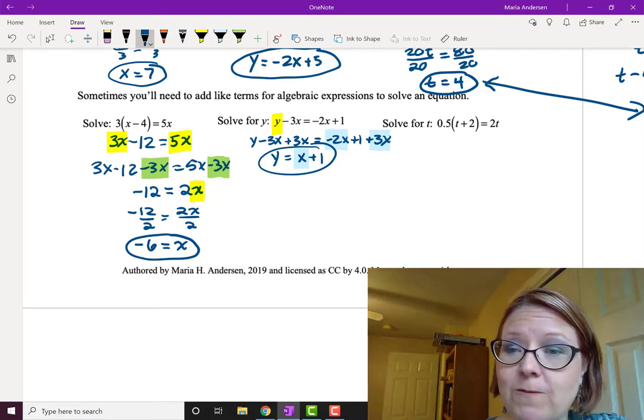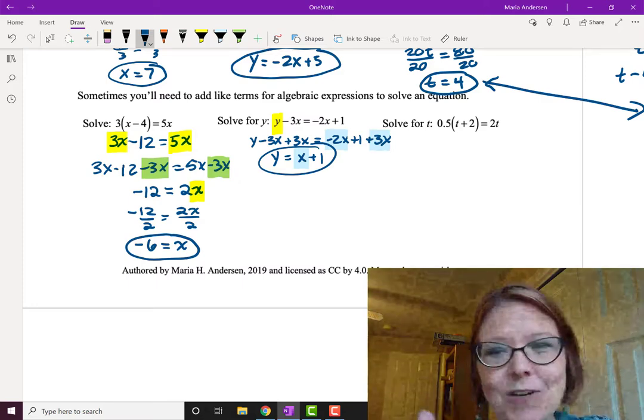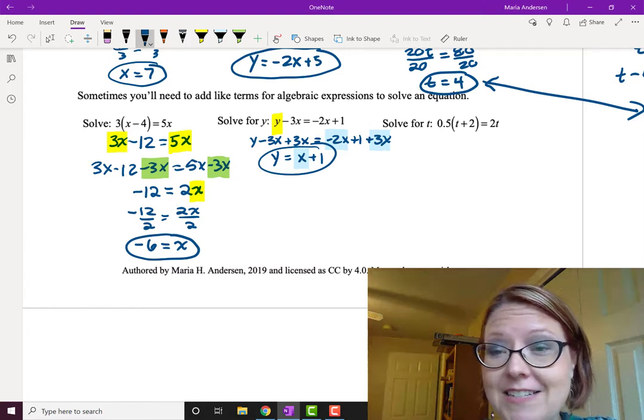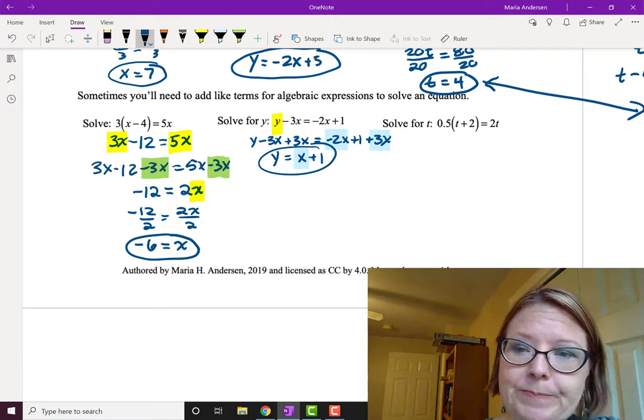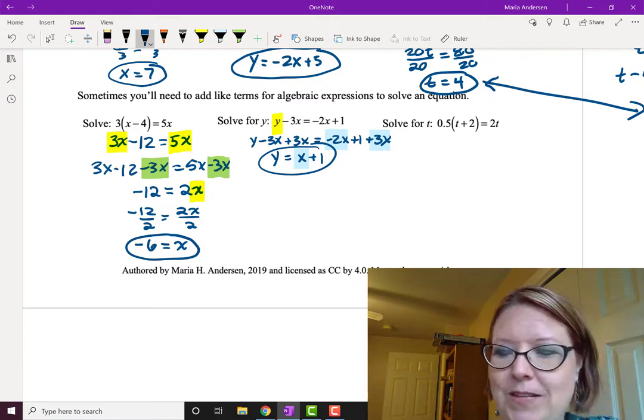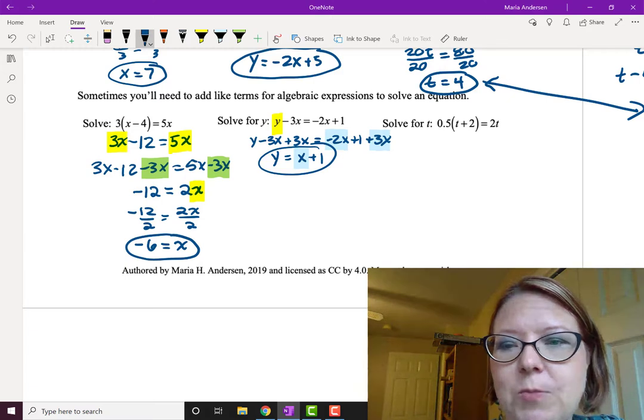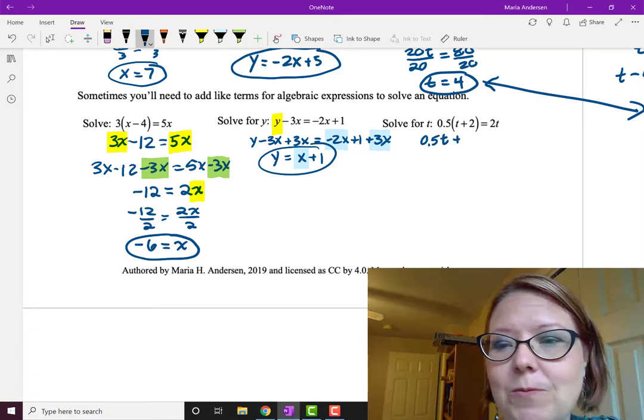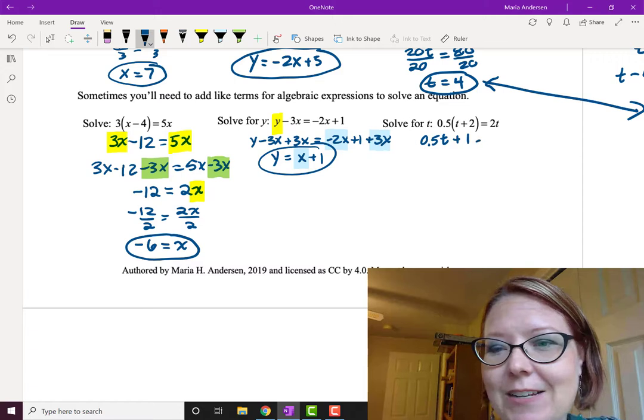In the last problem, we're going to solve for t, and we only have t's in this problem. So there is only one variable. We have 0.5 times the quantity t plus 2 equals 2t. All right, I'm going to distribute this one to get a sense of what's there. So I'm going to do 0.5 times t, which is of course 0.5t, and then 0.5 times 2, which gives us 1. So now I have 0.5t plus 1 equals 2t.